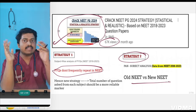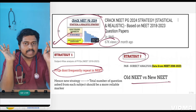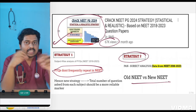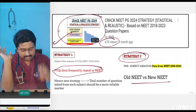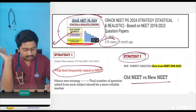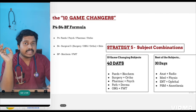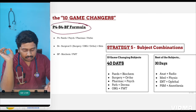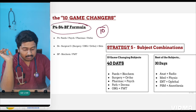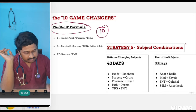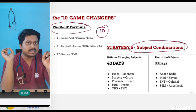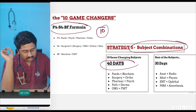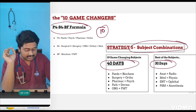The age-old idea that first and second year topics are important while third and fourth year are more clinical-based — that concept is gone. We had also discussed the 10 game-changing subjects using the P4 S4 BF formula, arriving at the 10 most important subjects, and the subject combinations to revise in the first 70 days.